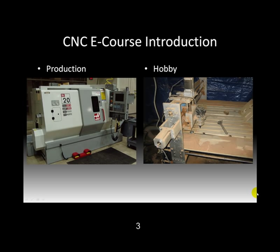You'll see on the left here is a production machine. This is a Haas — H-A-A-S — a Haas lathe, a production machine. You make part after part once you set up a program, and this is something that you would find in industry in some way, shape, or form. On the right-hand side, you see CNC technology used in a CNC router. This happens to be a CNC router that I built, and I use it for making signs or various projects and fun things. But the point is, this technology has gone from a very guarded group in industry into your own garage — you can do this at home.